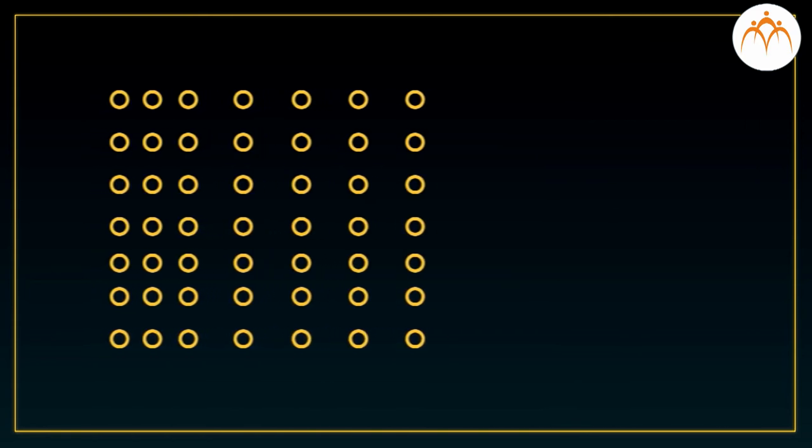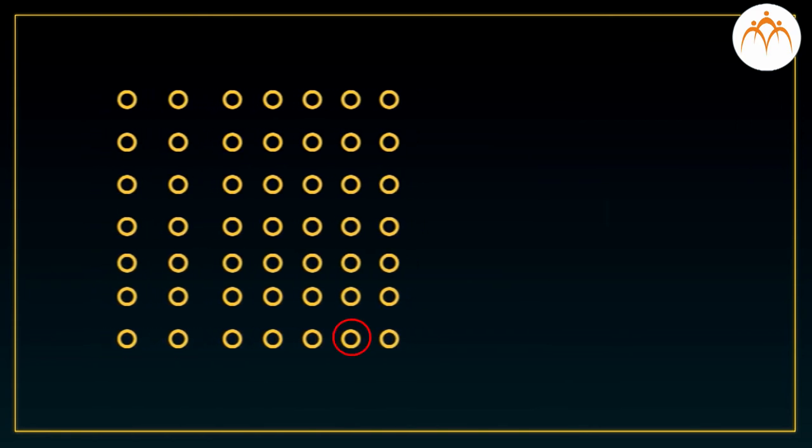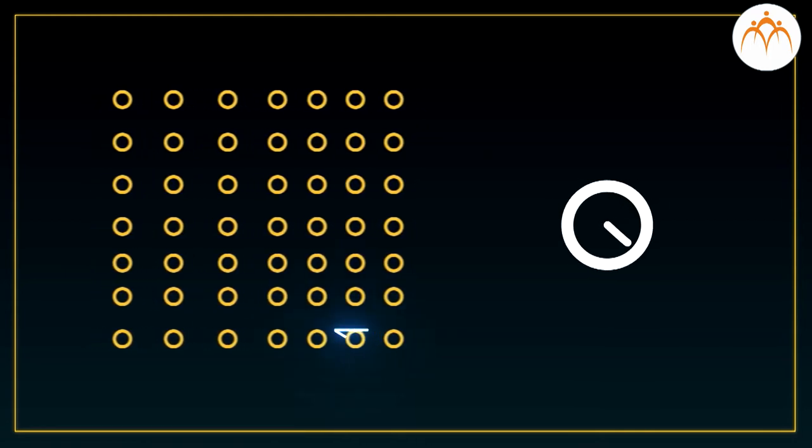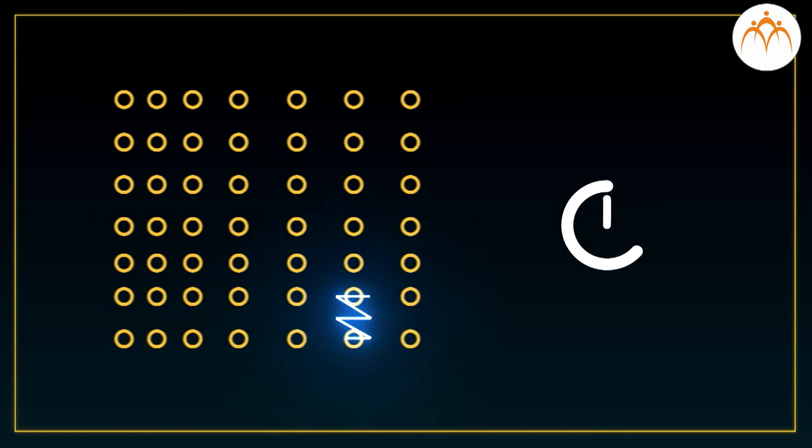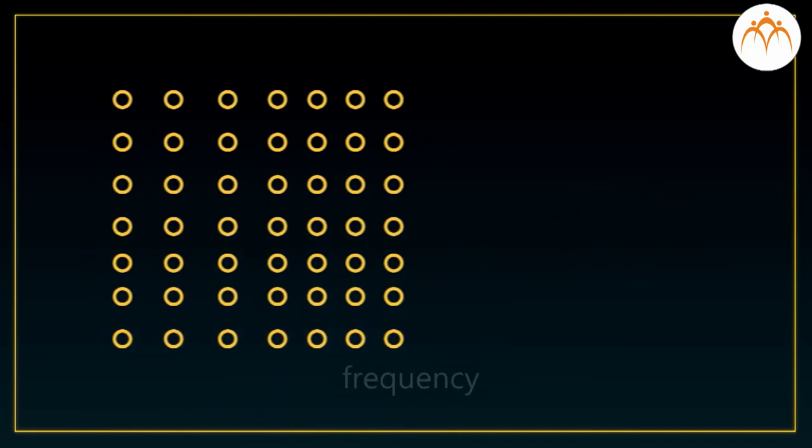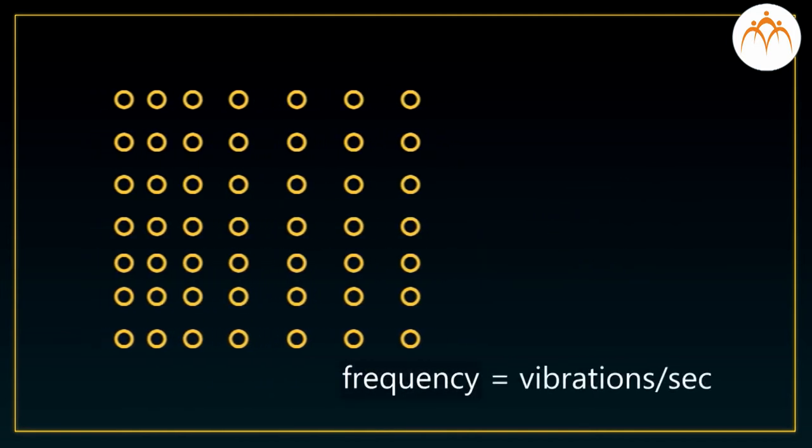Out of all the air molecules present, let's focus on one for now to understand the sound wave. What we are mentioning here is how frequently the ruler vibrates in each second. That is called as frequency. Number of vibrations per second.